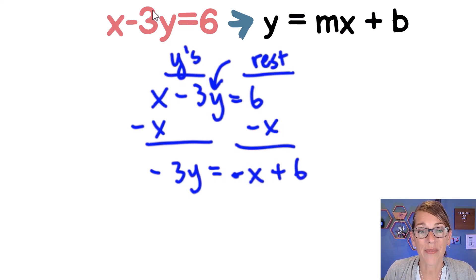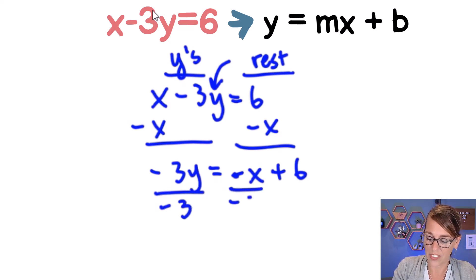I am almost there, but I really want y by itself. It's multiplied by negative 3, so let's divide everything on both sides by that negative 3. I'm going to divide by negative 3 on the left and negative 3 for both terms on the right. On the left my negative 3s cancel which is great and I get y.